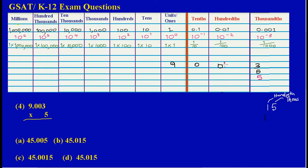Now I carry the one to my hundredths column. I'm going to say five times zero, and five times zero is zero, so I add the one that I've carried — zero plus one gives me a one. I place the one there. Now I've completed multiplying my hundredths column, so I move to my tenths column and say five times zero again, which gives me zero, so I carry the zero.